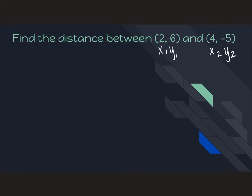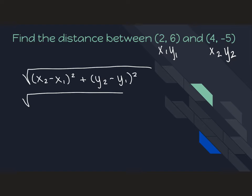Then we want to plug those into our formula. So the formula is X2 minus X1 squared plus Y2 minus Y1 squared. So when I fill this in, my X2 is 4, my X1 is 2, my Y2 is negative 5, my Y1 is 6.